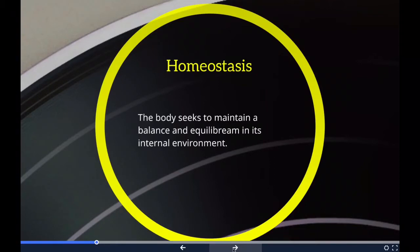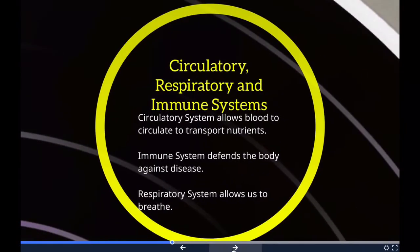An example of homeostasis is the body's ability to maintain an internal temperature of around 98.6 degrees Fahrenheit, regardless of the temperature outside. It might be really cold or really hot outside, but we are able to maintain 98.6 degrees.